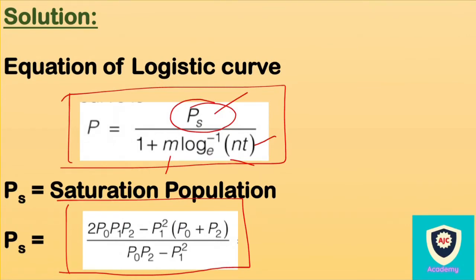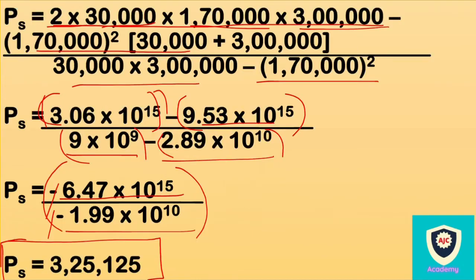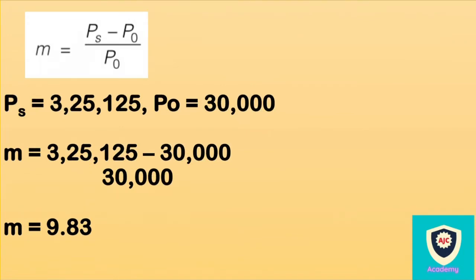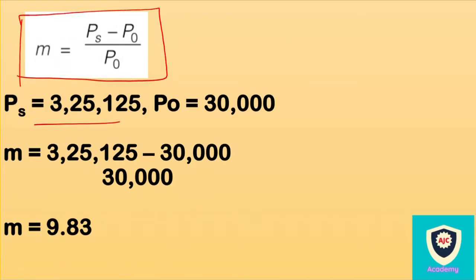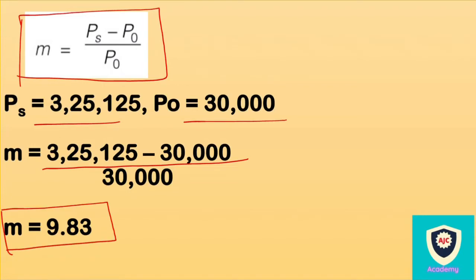Next, we find the m value using the logistic equation. The formula is: m equals (ps minus p0) divided by p0. Substituting ps equals 3,25,125 and p0 equals 30,000 gives m equals (3,25,125 minus 30,000) divided by 30,000, which gives m equal to 9.83.